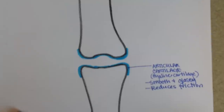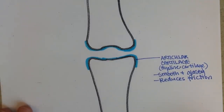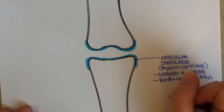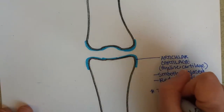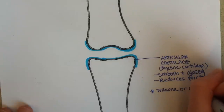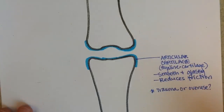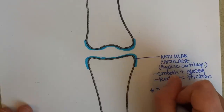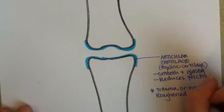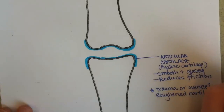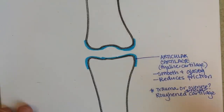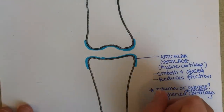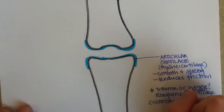We can find problems here. For example, if somebody falls and hits their knee really hard, they can have chunks break off, or they can have too much rubbing and it can become roughened. We could classify those as trauma or maybe overuse. Then you can get roughened articular cartilage — specifically articular, because there are also other kinds of cartilage in the knee we'll talk about.